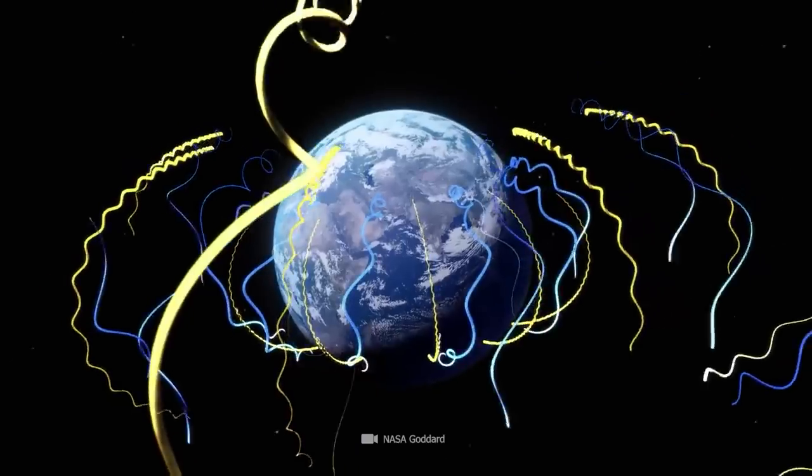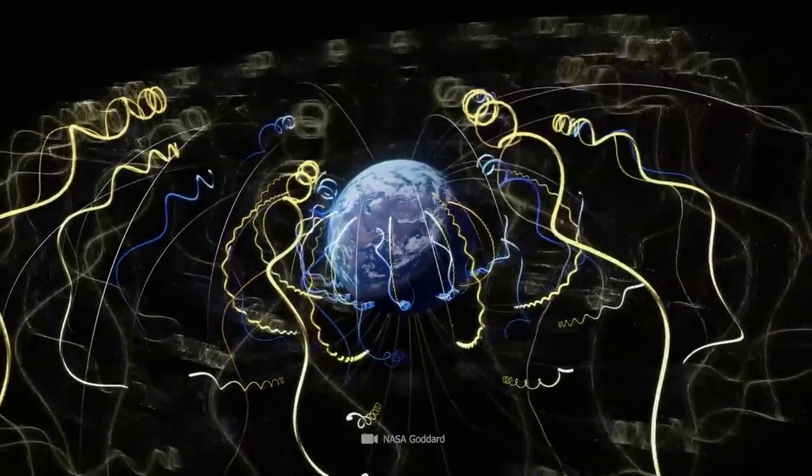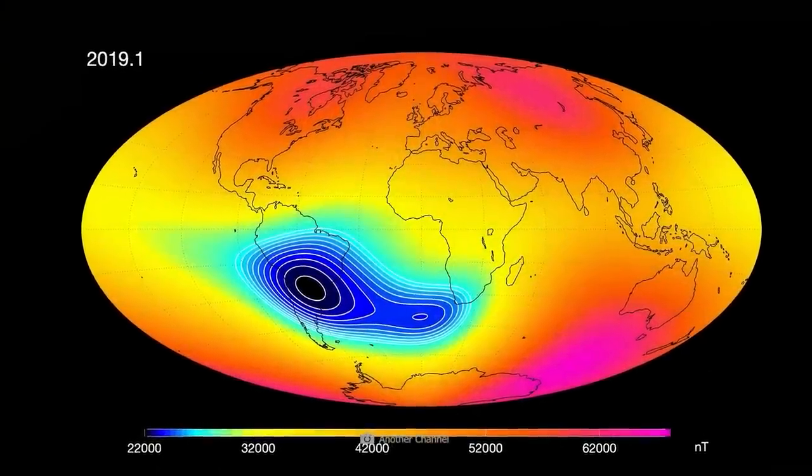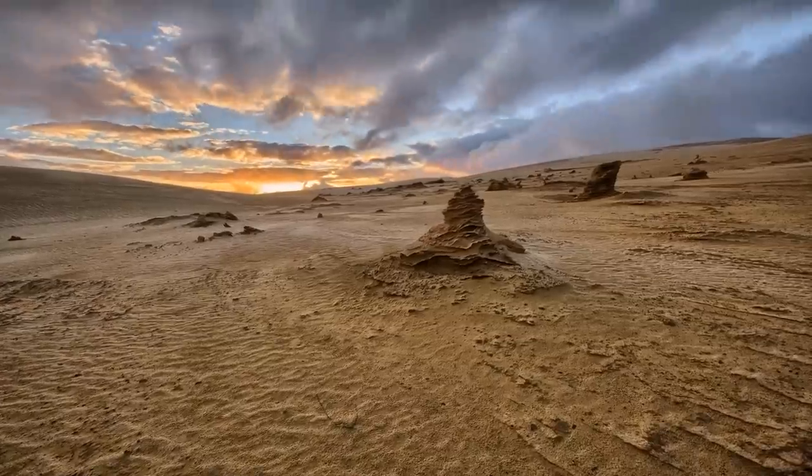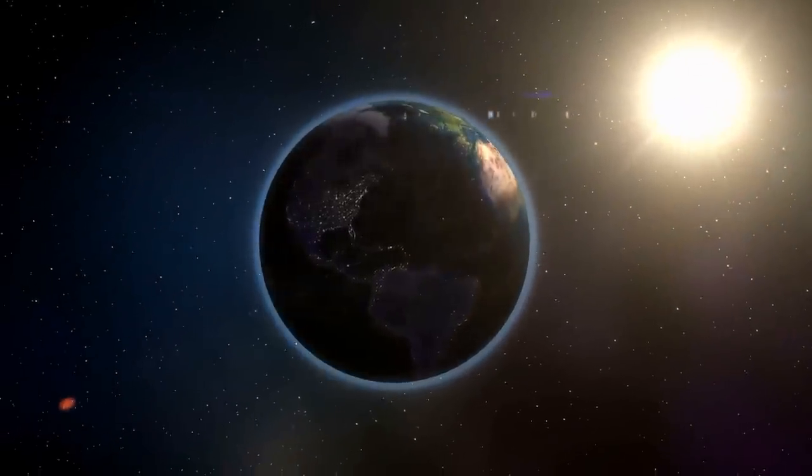Picture our planet as spaceship Earth, equipped with a genuine deflector shield, a geomagnetic field. This magnetic defense is constructed from lines of magnetic force, originating from the currents within the Earth's molten core.